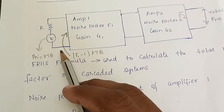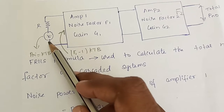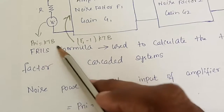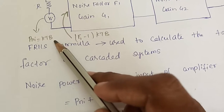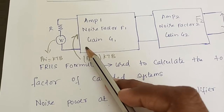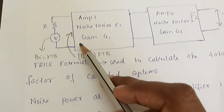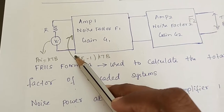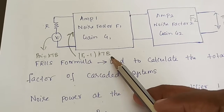We have to go stage by stage. The voltage source contributes an input noise power, which is thermal noise represented as K·T·B, where K is Boltzmann's constant, T is room temperature, and B is bandwidth. This is available at the input of Amplifier 1. Along with this input noise power, we have the noise power of Amplifier 1, PnA1, which can be represented as (F1 - 1)·KTB.